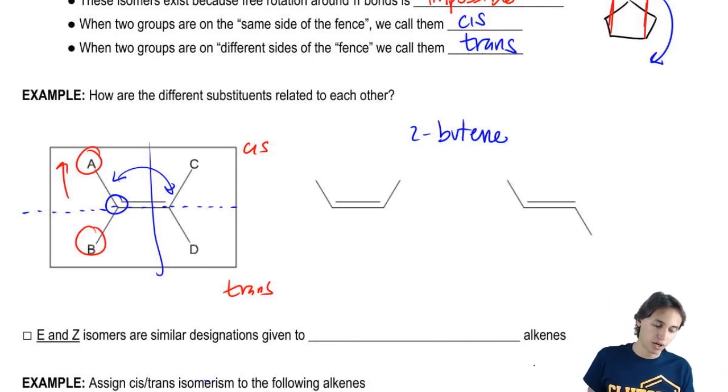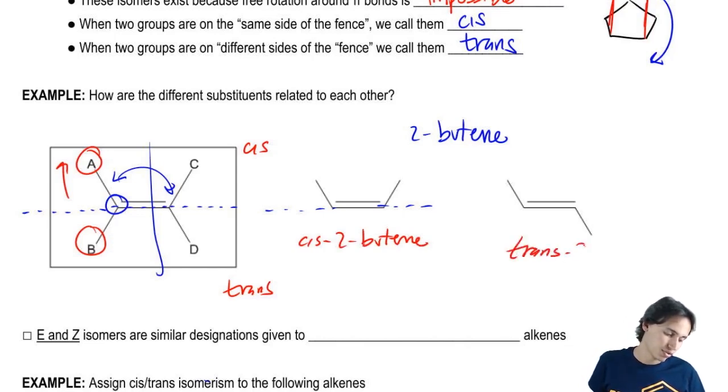So what would be the names that we would give to these to show that they're distinctly different? The names that we would give would be – well, I would draw my fence and I would say, okay, are these on the same side of the fence or different? Same. So this one would be cis-2-butene. And then this one would be trans-2-butene.